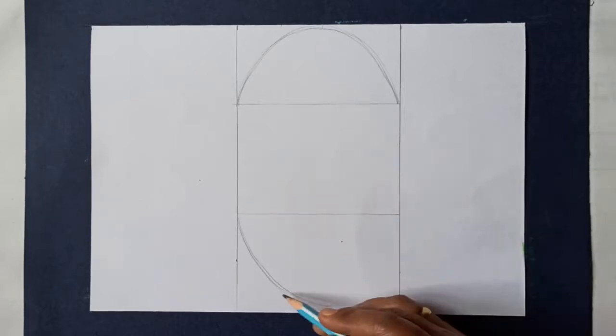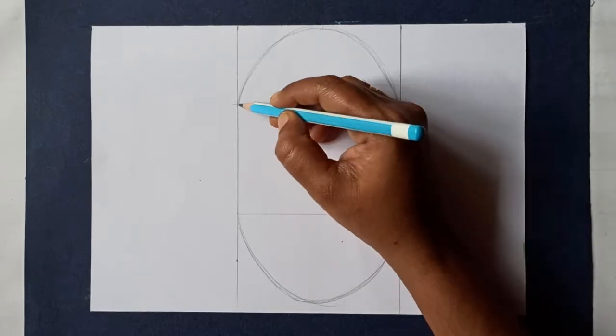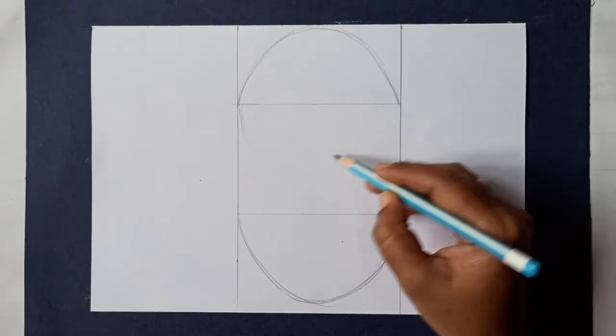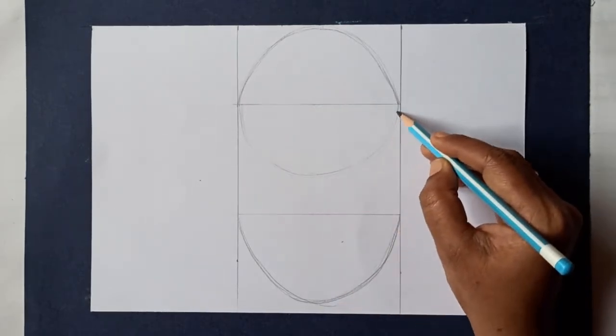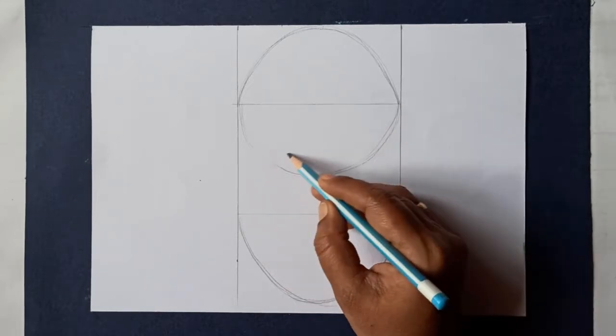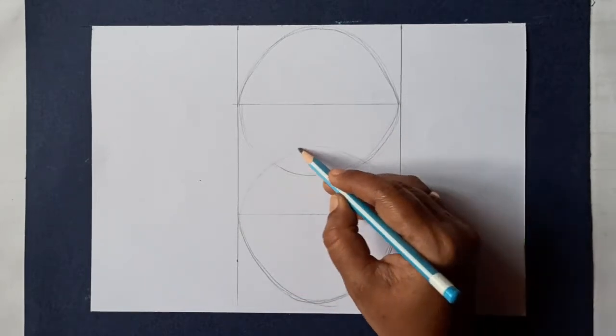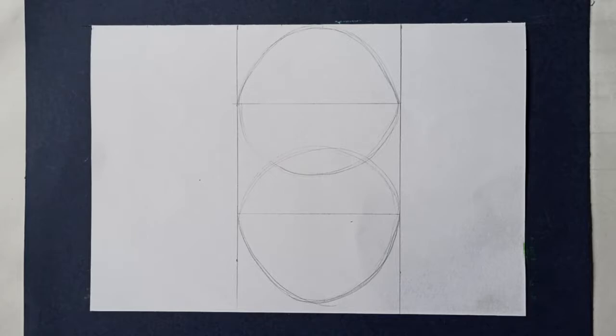And a curve line down here. We will draw the head of Zuzu. Draw the body as shown here. Erase the extra lines.